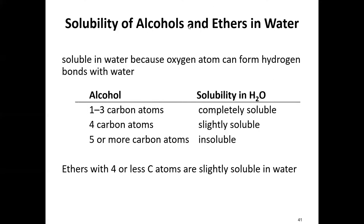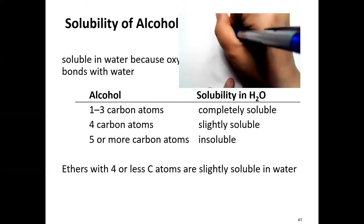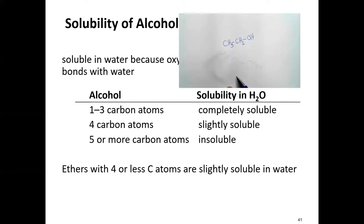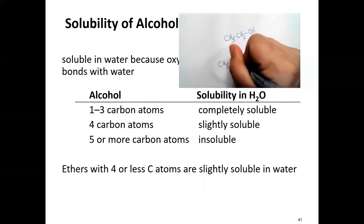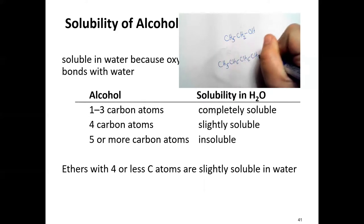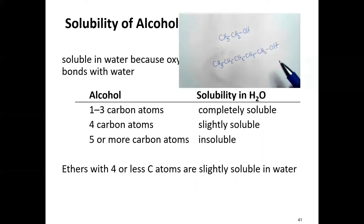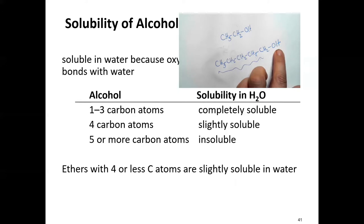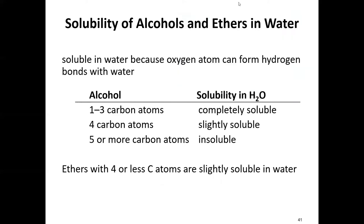With ethanol, the molecule is so small that the OH can make it completely soluble in water. With a pentanol, the OH is only a small part — there's not enough polarity to make that whole chain soluble. So: one to three carbons — completely soluble; four — slightly soluble; five and above — insoluble.